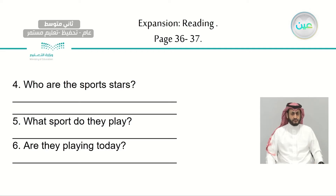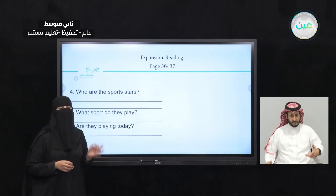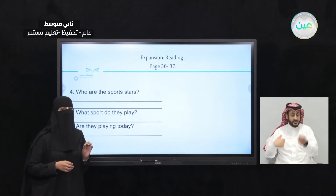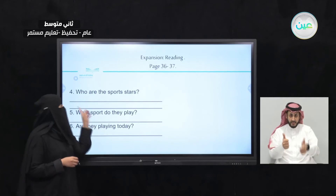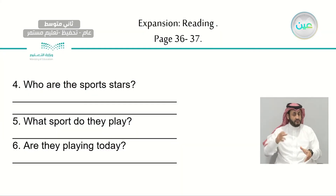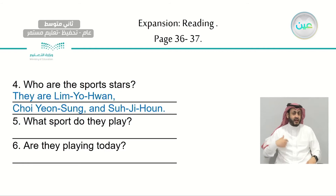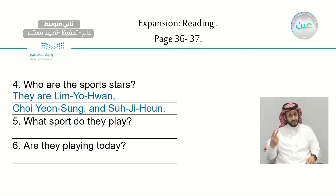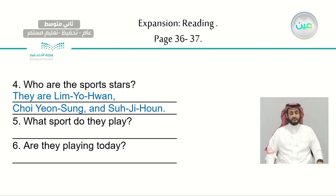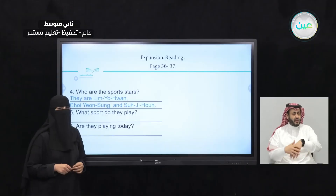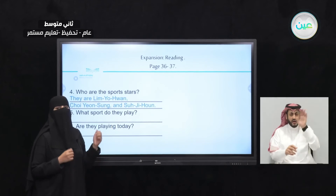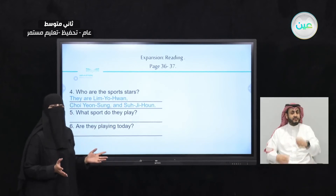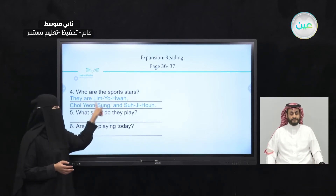Who are the sports stars? In the text, a few names were mentioned. These are names of Korean players. They are Lim, the first one; Cho, the second one; and Seo Jim Han. The next question: what sport do they play? Everyone is cheering and waving signs for them — so what sport do these three players play?